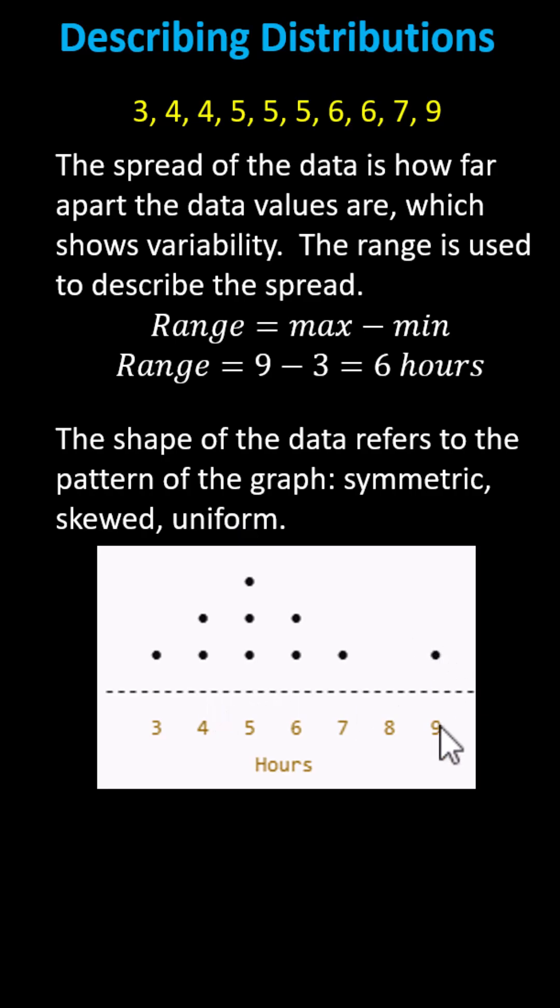If we did not have a data value at 9, this would be perfectly symmetric. If all the data values were the same, it would be uniform. In our case, we have one value here on the far right, we're trailing off to the right. We say this data set is fairly symmetric, but slightly skewed to the right.